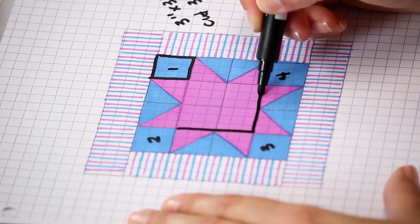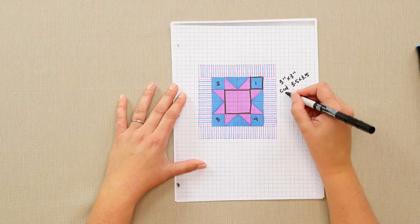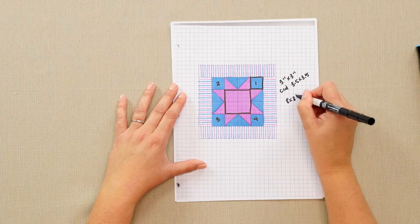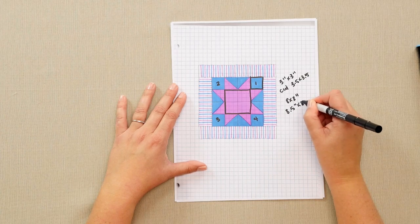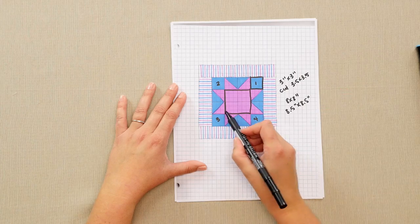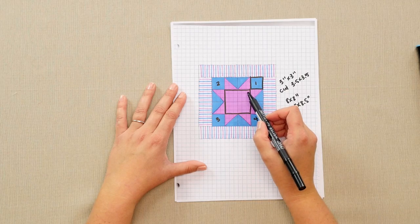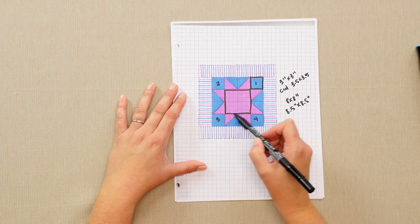My center square is eight inches by eight inches finished. So I'll need to cut an extra quarter inch on each side. So an eight and a half by eight and a half inch cut block will turn into an eight inch finished block.